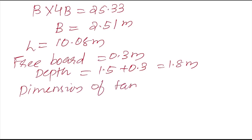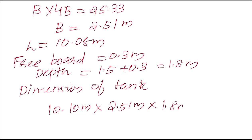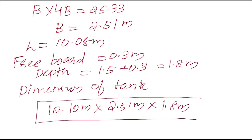Finally, the dimensions of the septic tank are: length = 10.10 meters, width = 2.51 meters, height = 1.8 meters. To summarize the steps: first calculate the total volume or capacity of the tank, then fix the ratio for length and breadth, and finally find the dimensions of the tank. This is a simple numerical problem — just try it. Thank you.